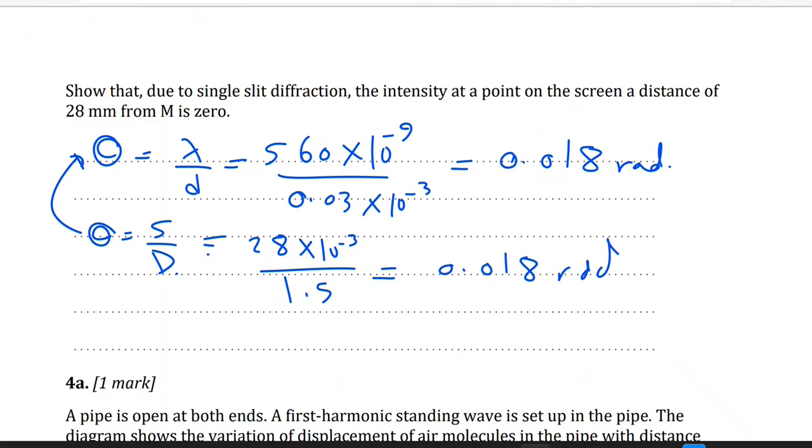So they're equal. That means the angular position at this particular point coincides with the first minimum of the diffraction envelope, and the intensity, of course, if they coincide, the intensity will be zero. That's it folks. Next video will continue with the rest of the questions in the document.